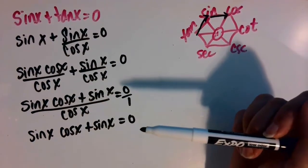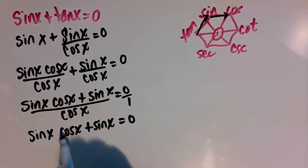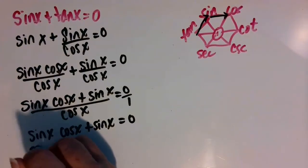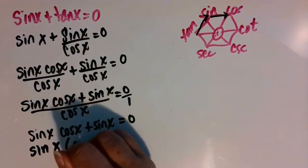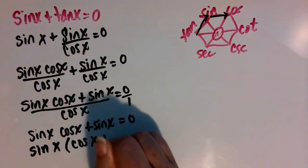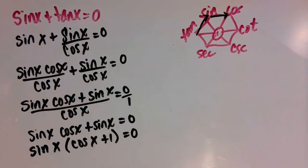Now we have two terms, so that's a binomial. Each of those two terms has a sine of x. So I can factor that as a GCF, a greatest common factor, to the front, leaving cosine of x plus one as my other factor.